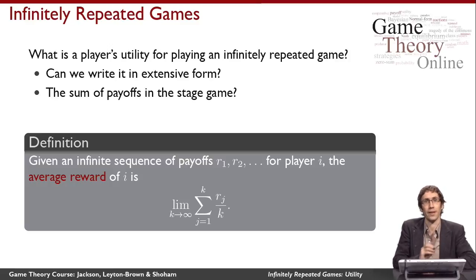But in cases where this is well defined, this is the right thing to do. And everything we'll talk about in this course will be well defined. So this is defined as the average reward that the player gets over the infinite sequence. This gives us one number.